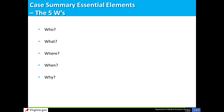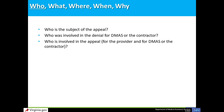There are five essential elements to a complete case summary: Who, What, Where, When, and Why. Who is the subject of the appeal — the provider, the member, and any DMAS contractors? Who was involved in the denial? Who issued the decision for DMAS or the DMAS contractor? Who will represent the provider in the appeal? Who will represent DMAS or the DMAS contractor?